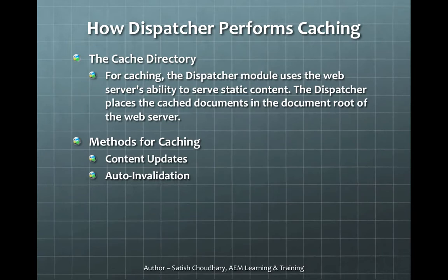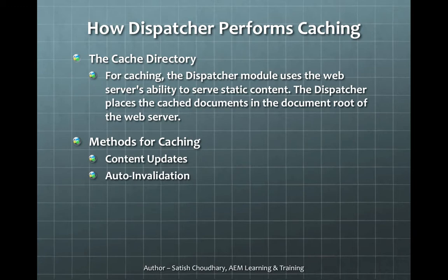How does dispatcher perform caching? There is a caching directory. The dispatcher module uses the web server's ability to serve static content. Think about any normal web server — it will have an HTTP directory, a www directory, or any static web server which can serve static content. The dispatcher places the cached documents in the root folder or document root of the web server. Based on the web server, the root may be different, but it replicates the exact HTML structure like any normal web server. There are two primary ways of caching: one is content update, and the other is auto-invalidation.